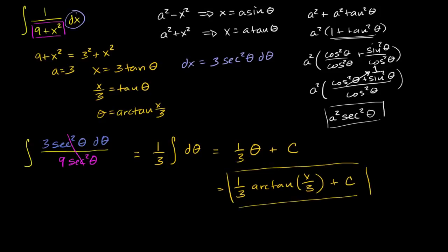So now we know how to deal with cases where we see something like an a squared minus x squared and an a squared plus x squared. It won't always work or make the integral solvable, but when u substitution isn't working, you could look for these patterns and try some trig substitution.